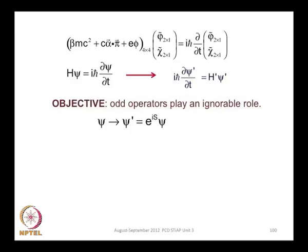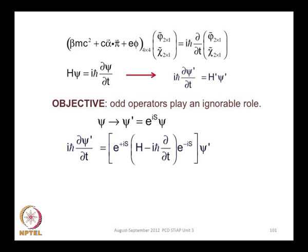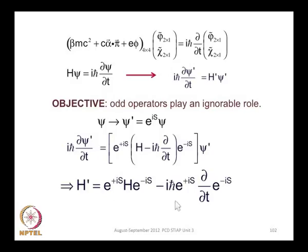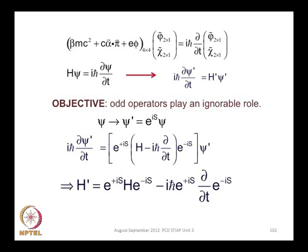This involves a transformation of the wave function psi to psi-prime through a transformation operator e^{iS}. If we do that, the corresponding Hamiltonian transforms to e^{iS} H e^{-iS}, plus an additional term because S cannot be assumed to be independent of time. This is the general form of the transformed Hamiltonian under the Foldy-Wouthuysen transformation, as discussed in the previous class.